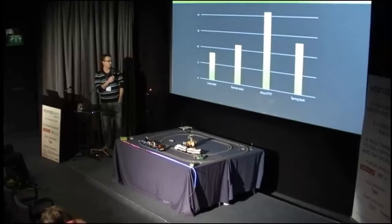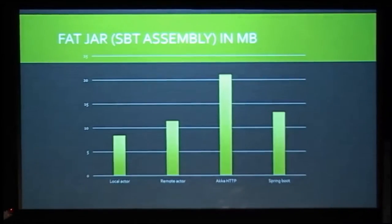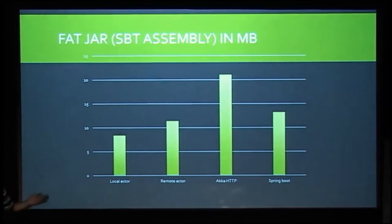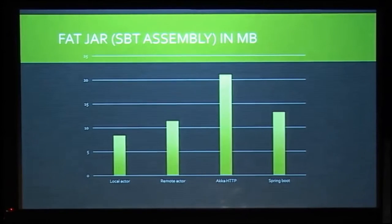We wanted to find measurable advantages, and one was the size of the fat JAR. We measured this with a super simple application in a few different technologies. A simple local actor service with just the basic Akka libraries was around 7-8 MB. Adding the remote actor libraries increased that by about 3 MB. Using the Akka HTTP stack bumped it up considerably to 21 MB, and just using Spring Boot to create a REST service was around 13 MB. If you need small packages to run on Pi Zeros, this might be an issue.